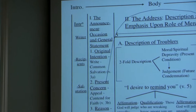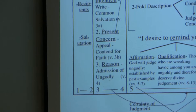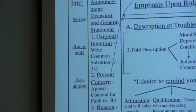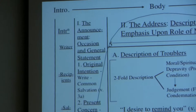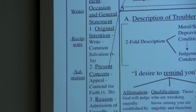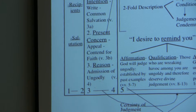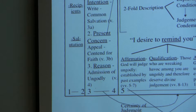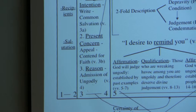This points to the occasion and the general statement of the letter — the message of the letter is presented here in a general way. In terms of the breakdown of verses 3 and 4, the subunits are: the original intention, which was to write of our common salvation; the present concern, which is the appeal to contend for the faith once for all delivered to the saints; and the reason for that appeal in verse 4 — admission has been secretly gained by ungodly persons who pervert the grace of our God and deny our only Master and Lord Jesus Christ.